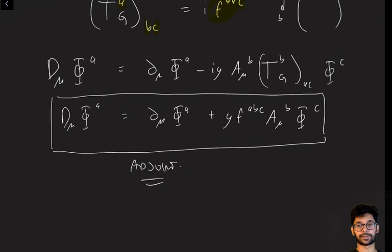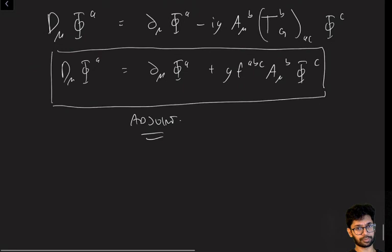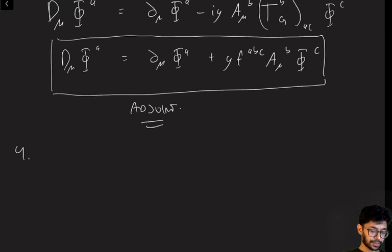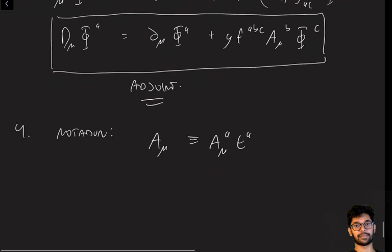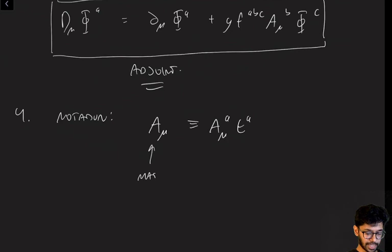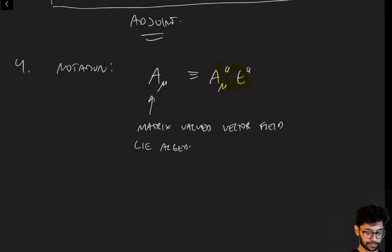I encourage you to take a second and think about how the covariant derivative would work in other, more complicated representations. Note also that this whole thing really depends only on the properties of the Lie algebra, not on the Lie group. One more notational note: sometimes I'll write A_mu by itself with no superscript, meaning A_mu = A_mu^A t^A — a matrix-valued vector field, or more precisely a Lie algebra-valued one-form.